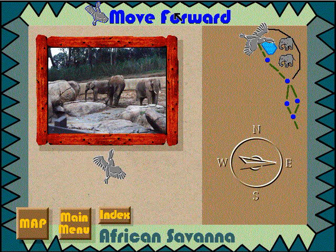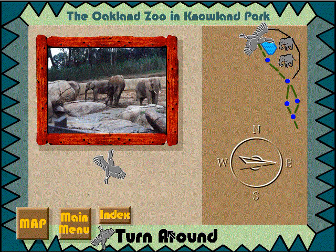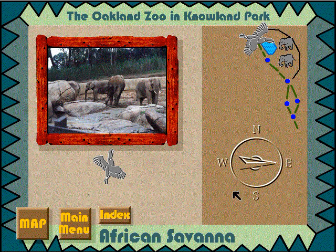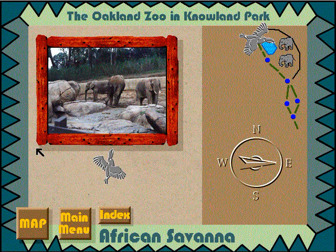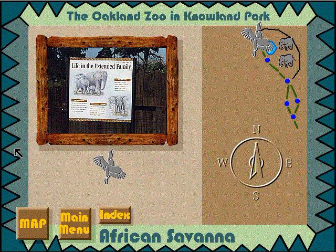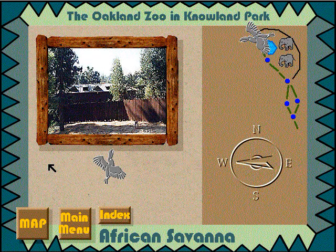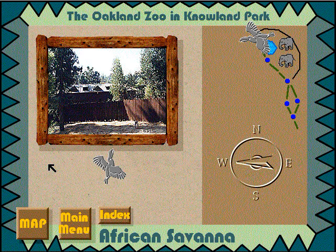Notice the compass — it tells you the direction that you are facing relative to the map. The bird on the map is you. This is the move forward button. This is the turn left button. This is the turn right button. This is the turn around button. Let us start with the turn left button. Notice that the picture in the virtual window changed. Also notice the compass and the bird on the map changed. You are now facing north. Each dot on the map contains four pictures representing north, south, east, and west views from that particular spot.